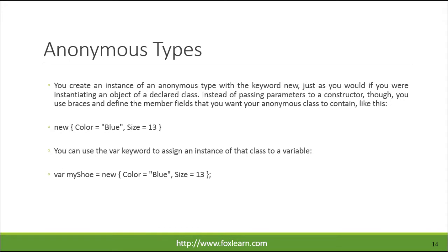You create an instance of an anonymous type with the keyword new, just as you would if you were instantiating an object of a declared class. Instead of passing parameters to a constructor, you use braces and define the member fields that you want your anonymous class to contain. You can use the var keyword to assign an instance of that class to a variable.